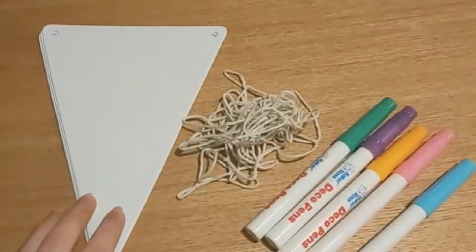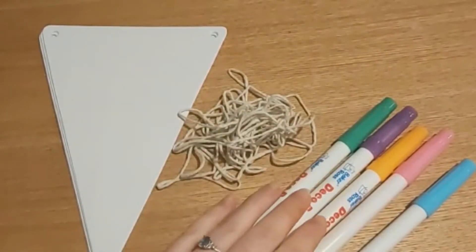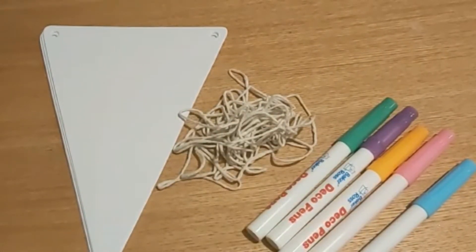In your box you will have 10 pieces of card, some string and some markers. You're going to use these to decorate your bunting.